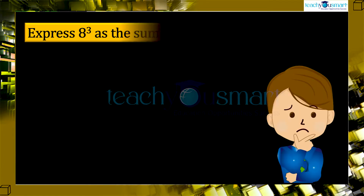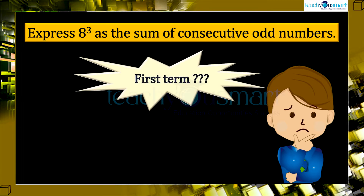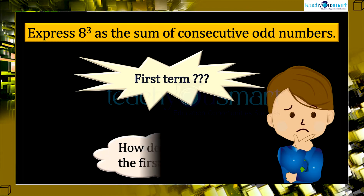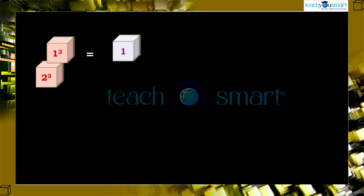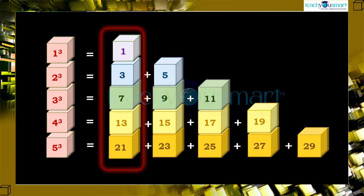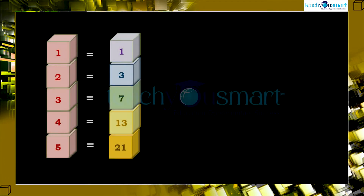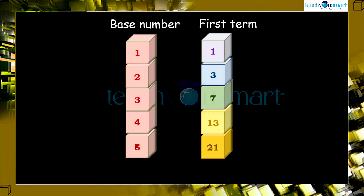Let's try to express 8 cube as the sum of consecutive odd numbers. For that, we have to identify the first term of that sequence. How do we find the first term? Let's compare the base numbers and first terms in the pattern. Can you find any relation between the base number and the corresponding first terms? We can express the first term like this.